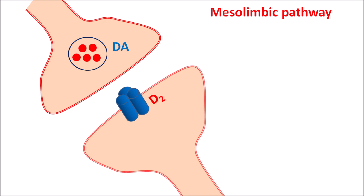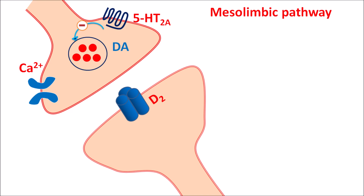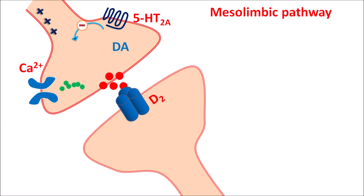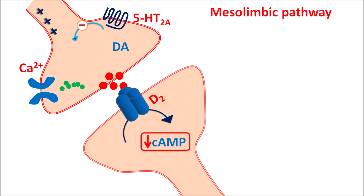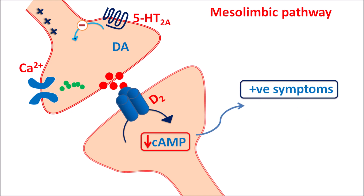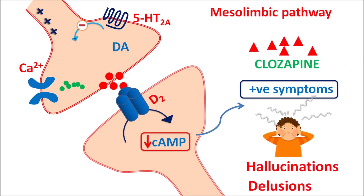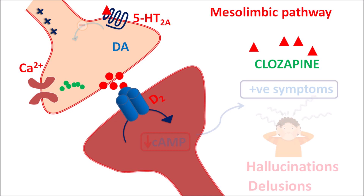In the mesolimbic pathway, dopaminergic neurons are present. On the postsynaptic neurons, D2 dopamine receptors are present, and on the presynaptic nerve terminals, calcium channels and 5HT2A receptors are present. These 5HT2A receptors are inhibitory — they decrease the release of dopamine. When an action potential reaches the presynaptic terminal, calcium enters, causing dopamine release. Dopamine acts on D2 receptors, decreasing cyclic AMP levels, which leads to positive symptoms such as hallucinations and delusions. Clozapine blocks these 5HT2A receptors, reducing inhibition on dopamine release, but simultaneously blocks D2 receptors, antagonizing dopamine's actions. This inhibits dopaminergic transmission and relieves positive symptoms.